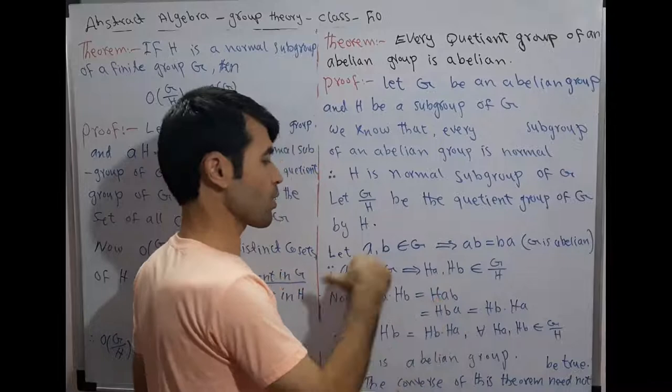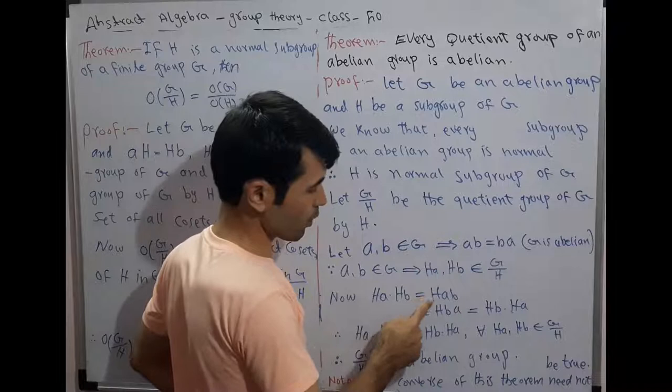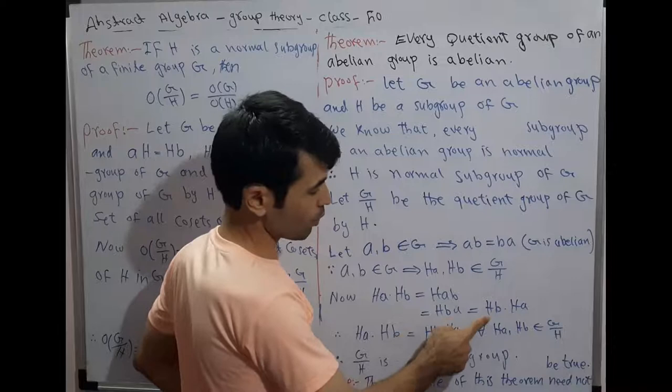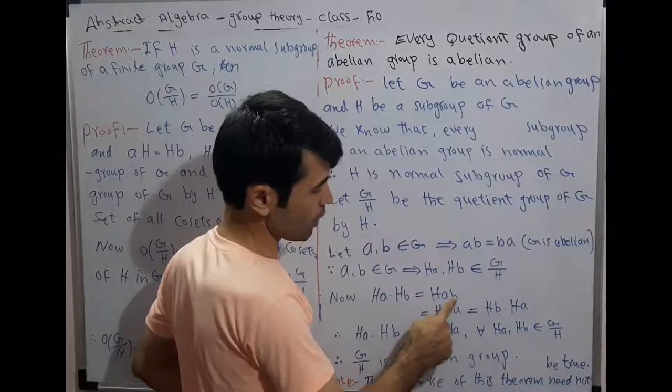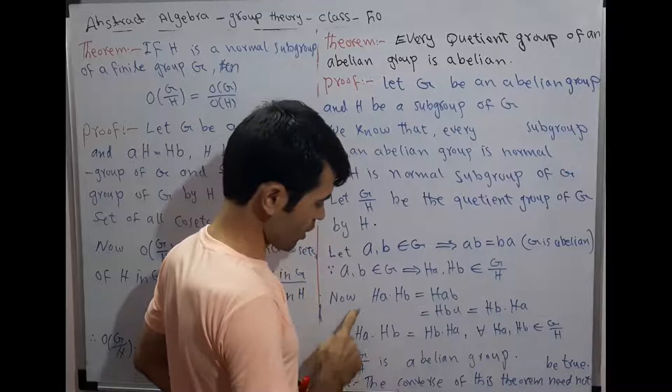Now, Ha times Hb equals H(ab). Since G is abelian, ab equals ba, so H(ab) equals H(ba), which equals Hb times Ha. Therefore Ha times Hb equals Hb times Ha for all Ha, Hb belonging to G by H.